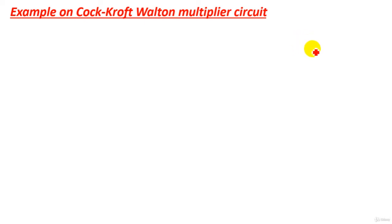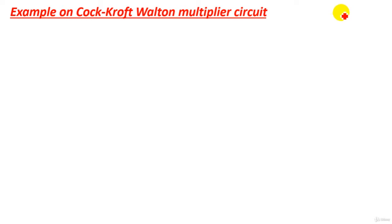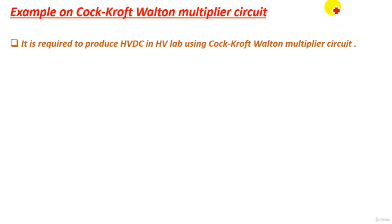Hello everyone. In this tutorial we will take a complete example on the Cockroft-Walton multiplier circuit for producing very high DC voltage. After understanding the operation of this circuit, how we can use it for producing high voltage DC, how to get the optimum number of stages, and how to obtain the highest DC voltage from this circuit. This example is about producing high voltage DC in a high voltage lab using a Cockroft-Walton multiplier circuit.